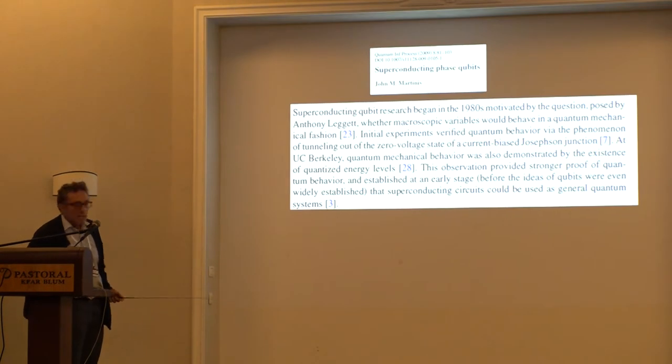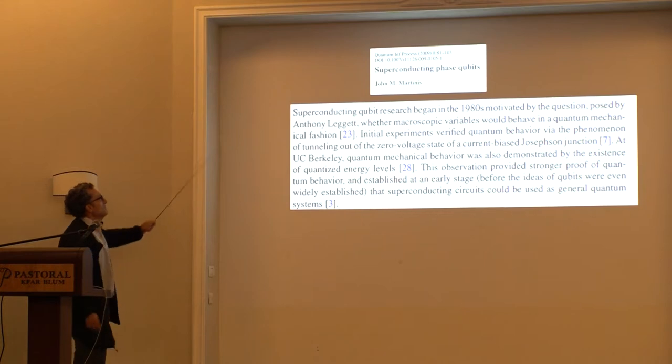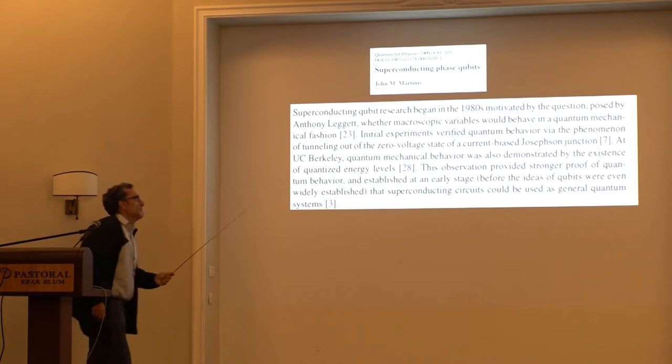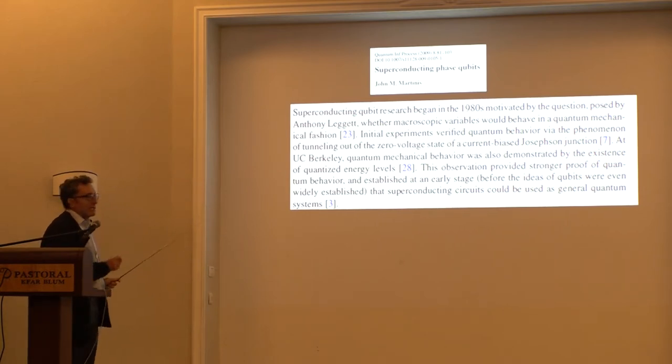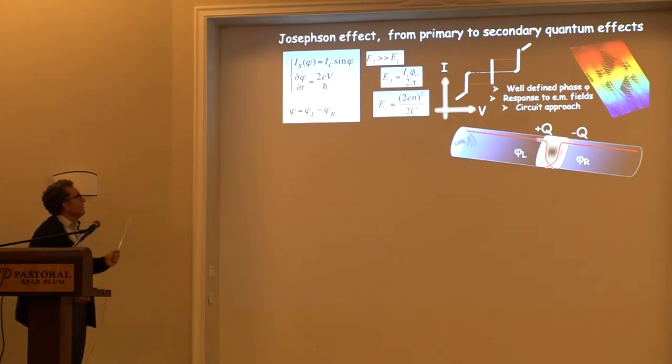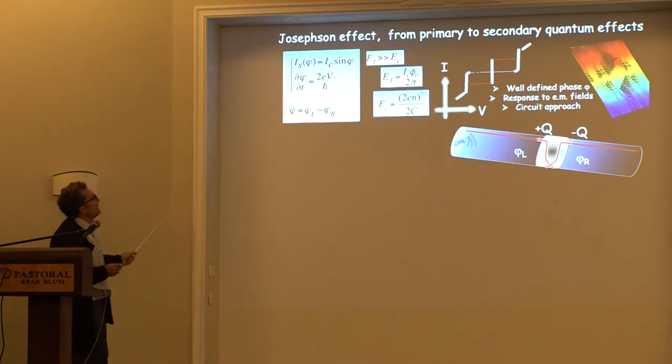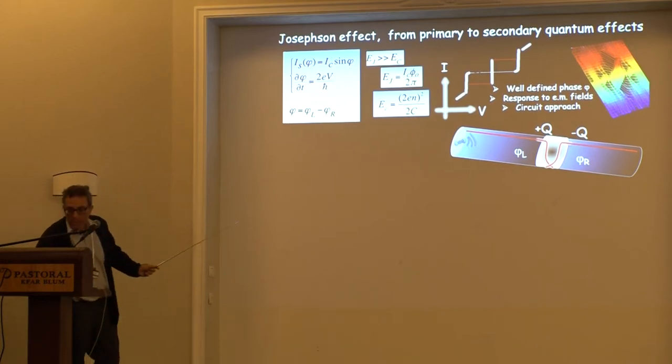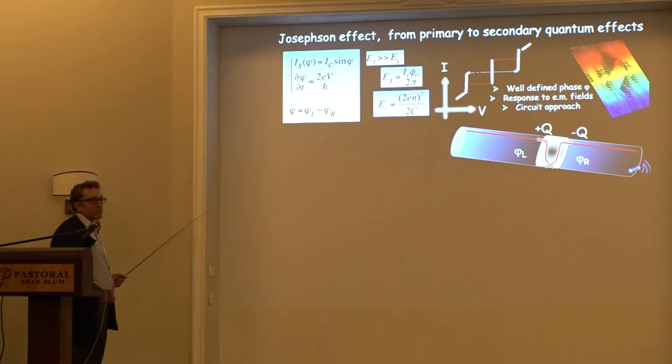I'd like to start from this paper by John Martinis, where he says that qubit research basically started in the 80s. I will briefly sketch this concept when Tony Leggett posed the question of whether macroscopic variables would behave in a quantum mechanical fashion. That's the incipit.